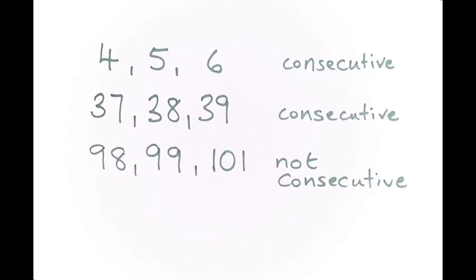You may already know what a consecutive number is, but if not, here are some examples. Four, five, six are consecutive. Thirty-seven, thirty-eight, thirty-nine are consecutive. They follow on from each other.